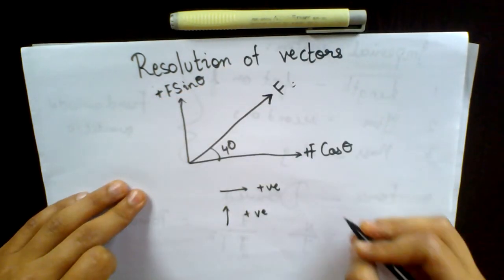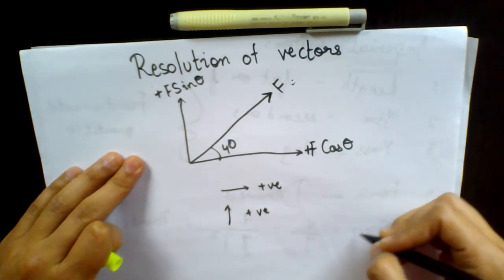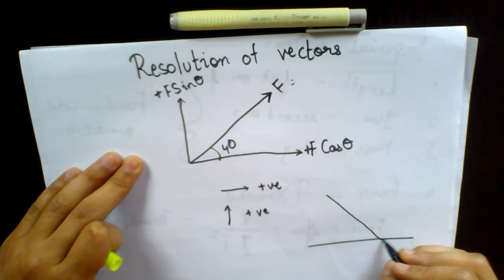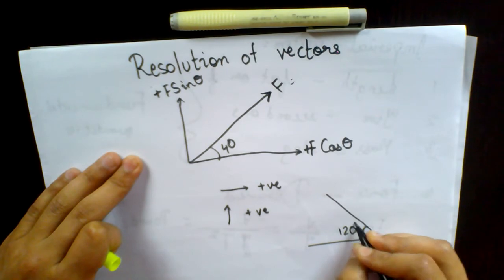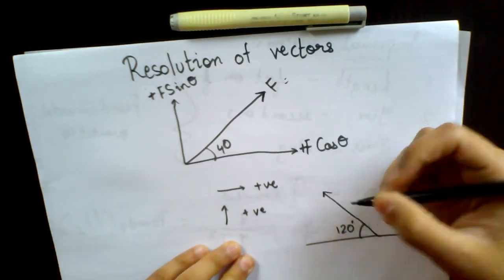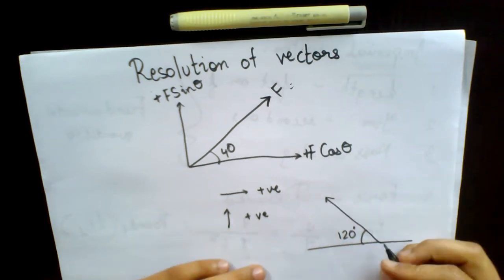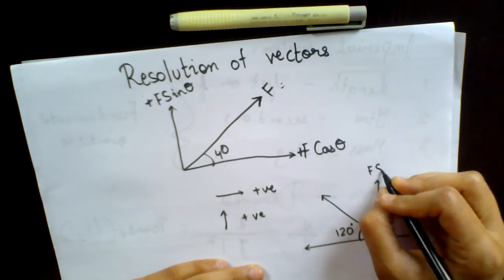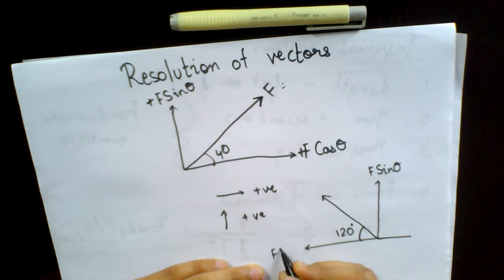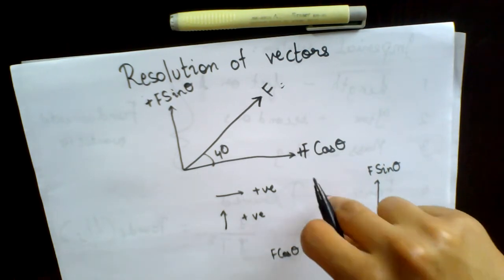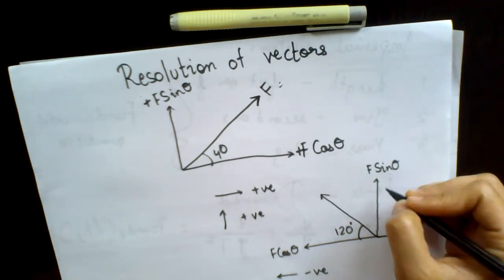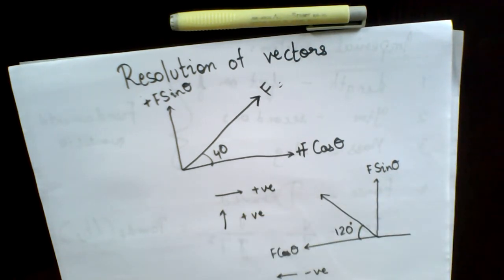On the other hand, if you have a force going in the opposite direction, and you have it at 120 degrees, with the force moving in this direction — in this example also the force is resolved into two components, which is F sin theta and F cos theta. However, because of the direction, the force F cos theta is moving to the left direction, so it will be negative. And F sin theta is still positive, because it is going in the upward direction, so this is positive.